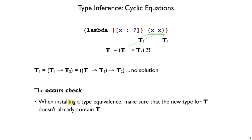The process of checking for that type variable is called the occurs check. So whenever we're setting up an equivalence for some type t, make sure the thing we're setting it to does not already contain t. It's okay if it's exactly t, but otherwise it cannot contain t.